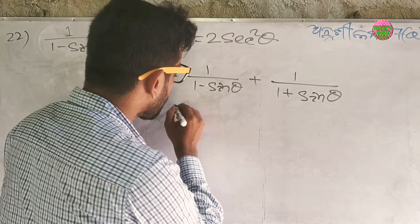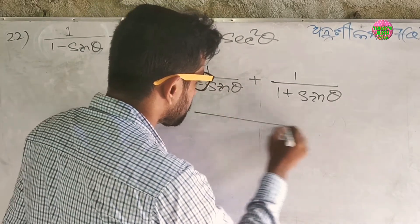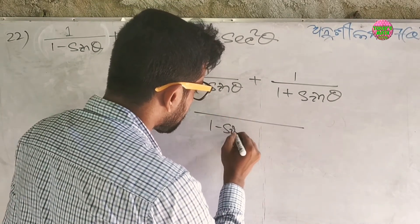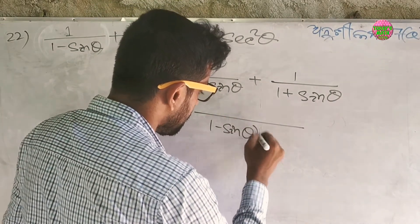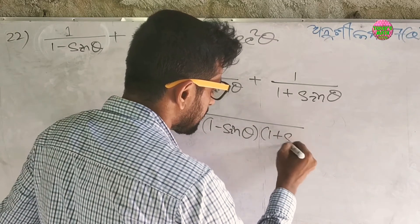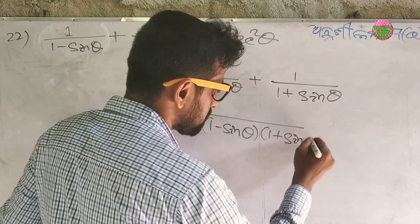LHS is now combined over the common denominator (1 minus sin theta) into (1 plus sin theta).